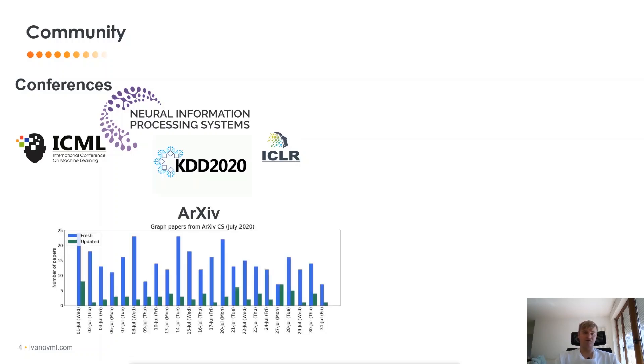At arXiv, if you look at the number of papers that we have in the intersection of computer science and graph theory, this would be approximately 350 papers. This is a very huge and active area of research.